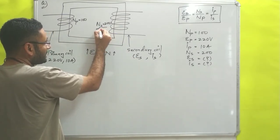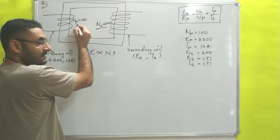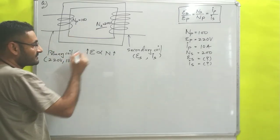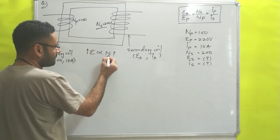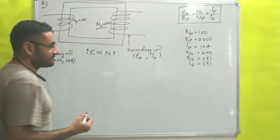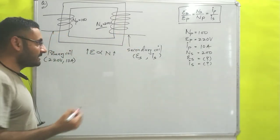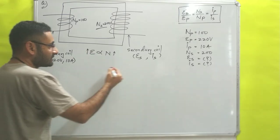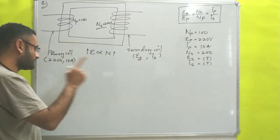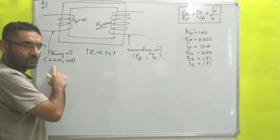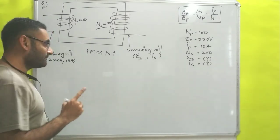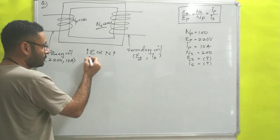On the secondary side, the number of turns is higher than the primary side. So if the primary side has 220 volts and secondary has more turns, the potential on the secondary side will also be high — the answer for ES must be greater than 220 volts.